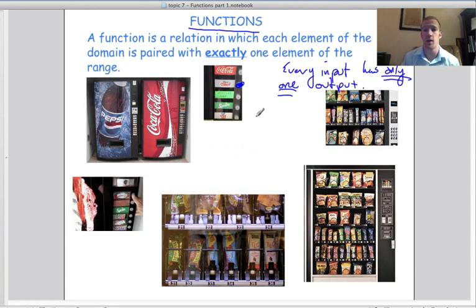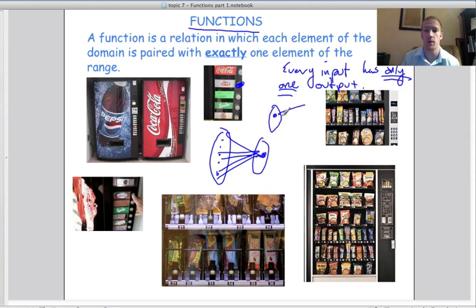We could have something like a water machine where every single button gives you the same output. That's fine. So if we have a bunch of different inputs, and they all give you the same output, one output, that's fine. You just can never have the situation where one input gives you two different outputs. That's not a function. If one input gives you two outputs, it's not a function. It's a relation, but it's not a function.